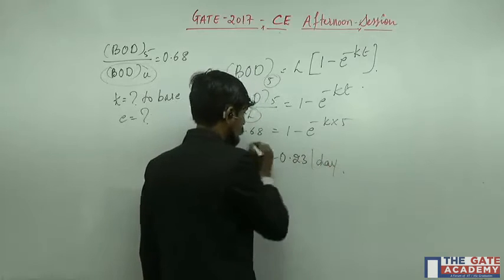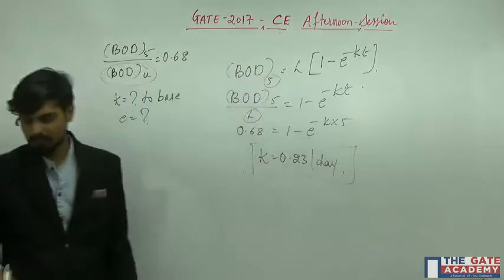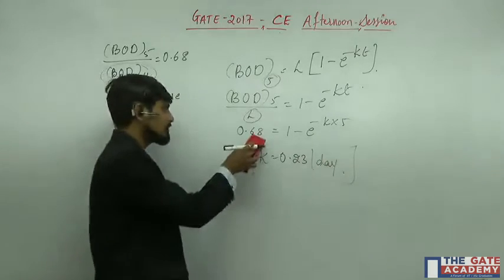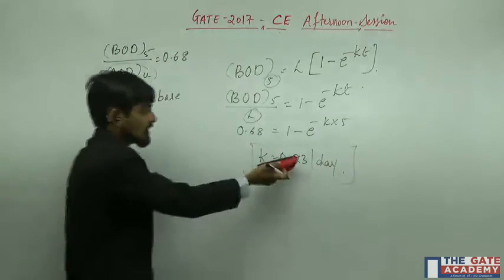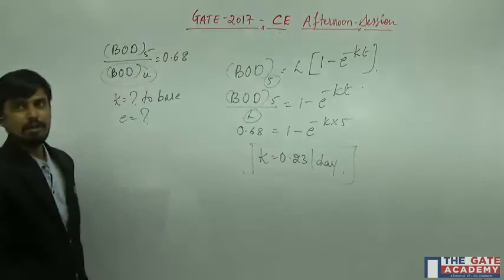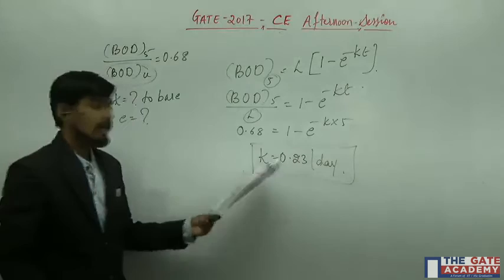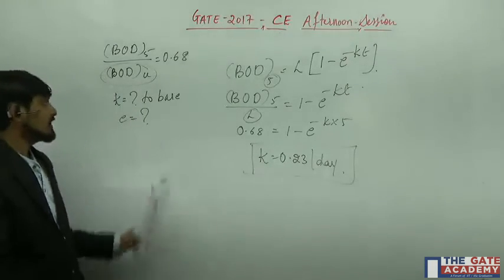It is a standard value. By seeing this ratio 0.68 only, directly I can write 0.23. That is a standard value of k at 20 degree centigrade to the base e.